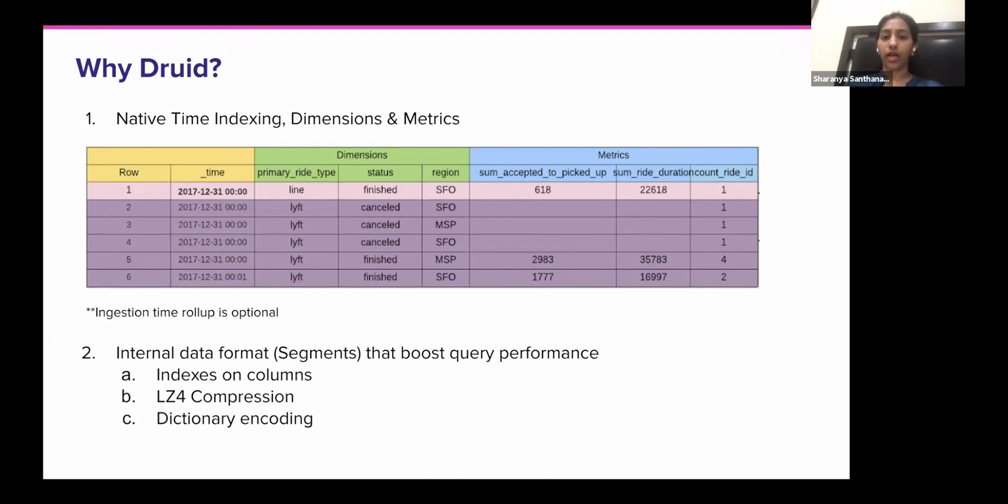Secondly, all of the data, when you define a data source in Druid, it is schematized and you have to define which columns would be dimensions and which columns would be the metrics. So dimensions, you can think of it as columns on which you would want to do a filter or a group by, and metrics are basically columns for representing statistics, like aggregate information. And the way Druid does this is you can almost think of it as like a group by where the key is timestamp plus all the dimension columns and all of the aggregation happens on this key.